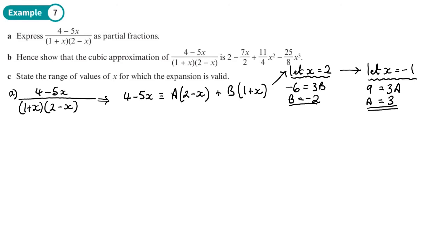So written as partial fractions, the answer to part A is three over (1 plus x) minus two over (2 minus x).